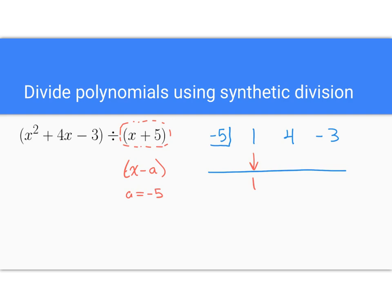So that's the setup for synthetic division. And then what happens, this first number just comes down, 1. You multiply this by negative 5, and you put the result underneath the 4. Then you add these, get a negative 1, multiply this by negative 5, put the result here. Then you add negative 3 plus 5, gives you a 2.